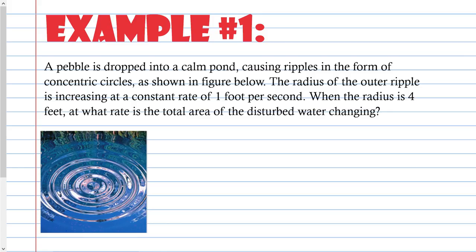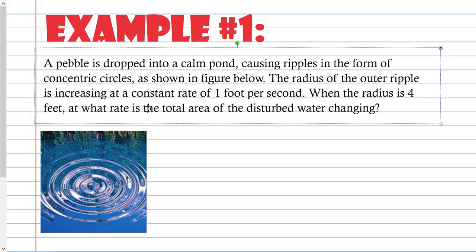This is a lot easier once you've done it a while. A pebble is dropped into a pond causing ripples in the form of concentric circles — circles within circles that share the same center. The radius of the outer ripple is increasing at a constant rate of one foot per second when the radius is four feet. At what rate is the total area of the disturbed water changing?